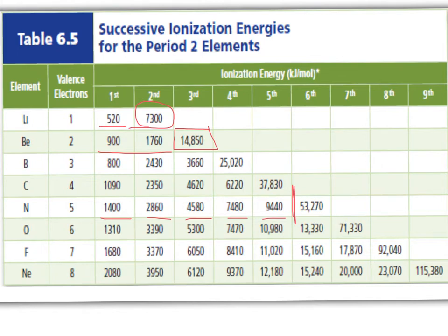Sure enough, nitrogen has 5 valence electrons. And even neon, being a noble gas that won't easily give up its electrons, we still see a pretty steady increase in ionization energy until we try to take that ninth electron and go to an inner energy level — then the amount of energy gets ridiculously high. That's one way you can tell how many valence electrons are in an atom, which helps when working with unknown elements.